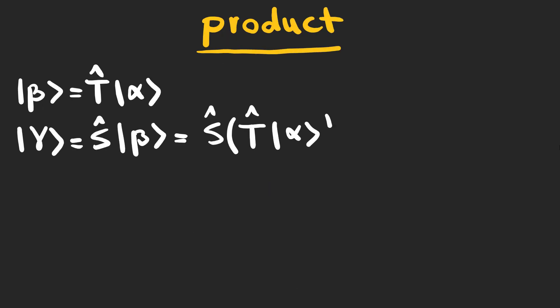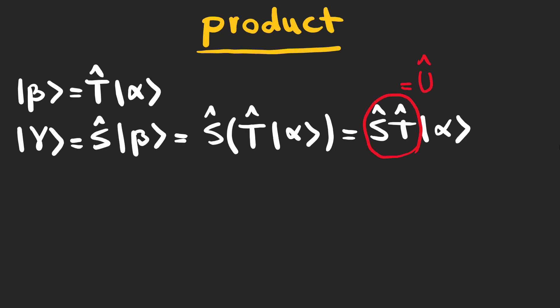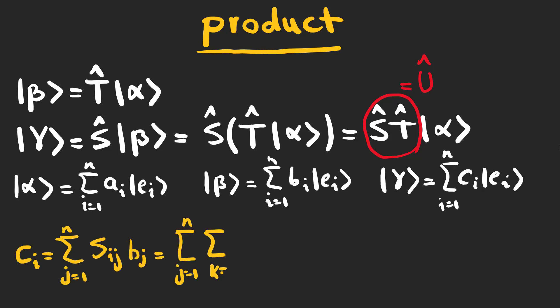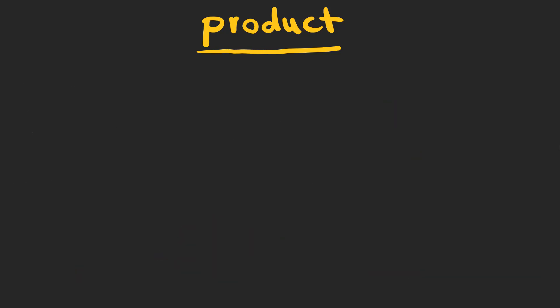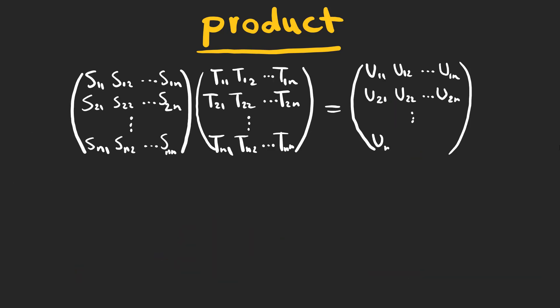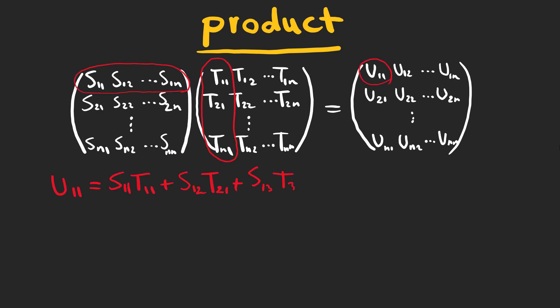Two successive linear transformations on a vector can be represented as the product of the two linear transformations, which we call U. In component form, it can be written as this expression, which we use to show the matrix representation. To find U_11, take the first row of matrix S and the first column of matrix T, then multiply each corresponding element and add.